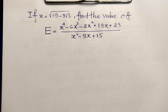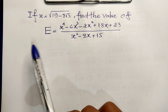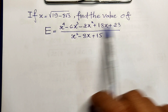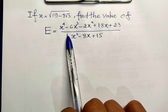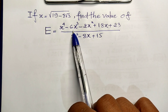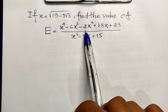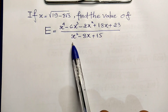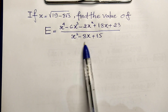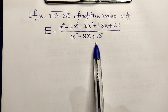Hello everyone, welcome to my YouTube channel. Today I have one exercise on papers. Find the value of the expression: x⁴ minus 6x³ minus 2x² plus 18x plus 23, divided by x² minus 8x plus 15.